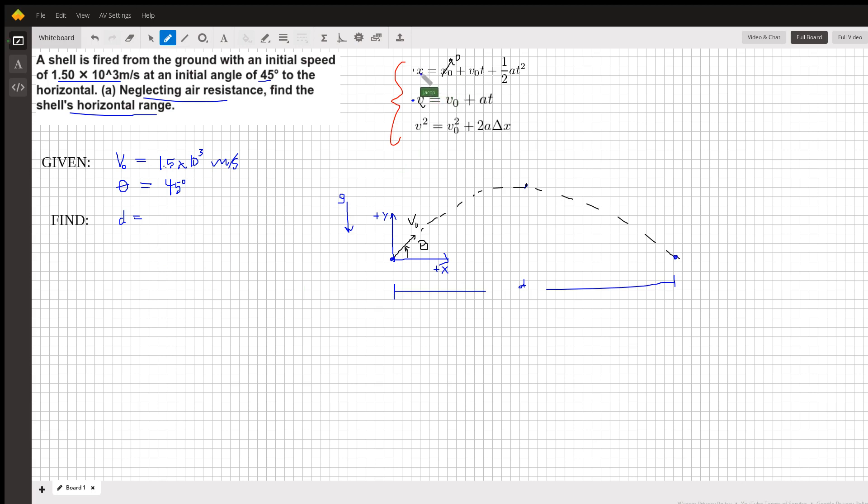Now we can use this first equation to help us find the horizontal range of this problem. So x is our final distance, the distance that we want to find. So x is just going to be D, the horizontal range. Now x naught is at the start of our coordinate system, which is right here, and that is equal to zero. The velocity v naught t—v naught is the velocity in the x direction. So what is the velocity in the x direction?